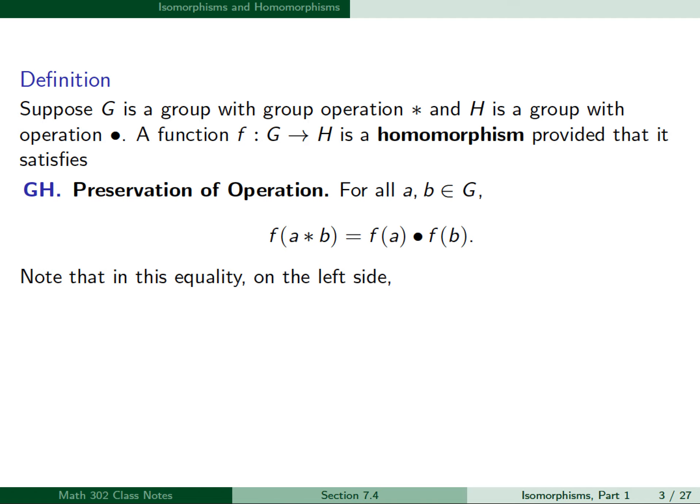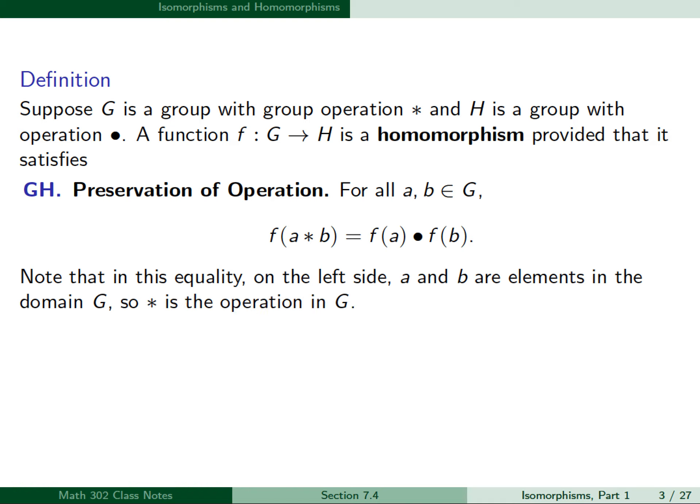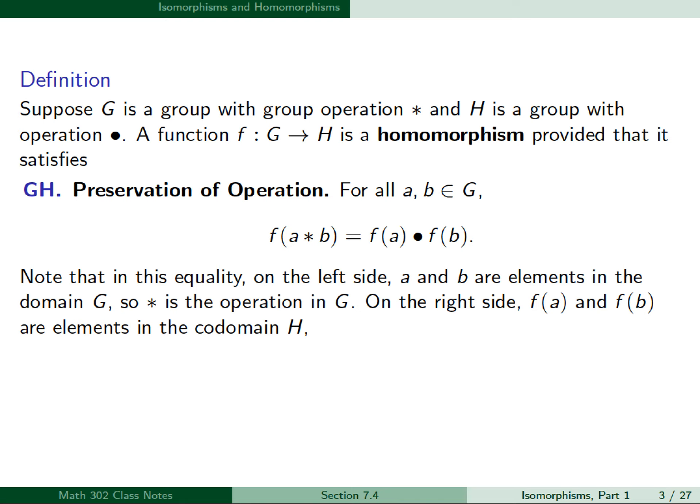Note that in this equality, on the left side, a and b are elements in the domain G, so star is the operation in G. On the right side, f(a) and f(b) are elements in the codomain H, so dot is the operation in H.